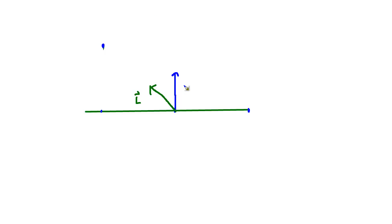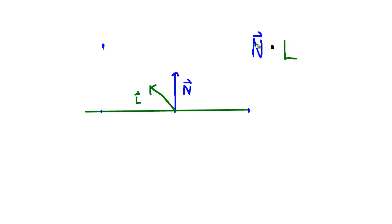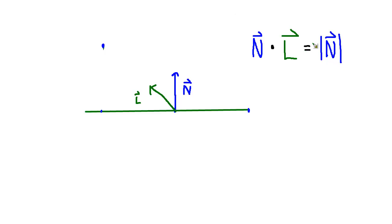We have a vector N — the surface normal vector — and a light vector L. If you talk to any old-timers about lighting, they like to say N dot L — meaning we take the surface normal vector and compute a vector dot product with the light vector. That gives us the famous equation used all over computer graphics, games, and physics: the dot product equals the magnitude of N times the magnitude of L times the cosine of the angle between them.